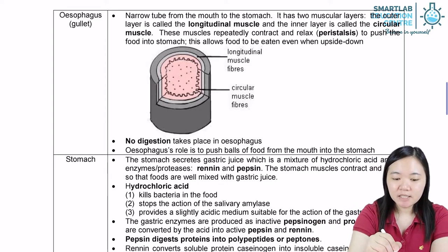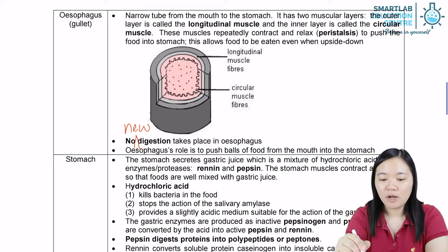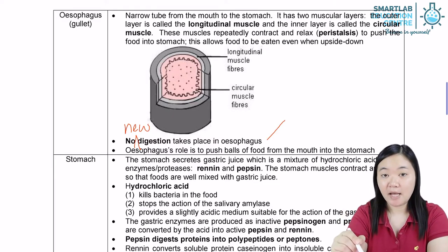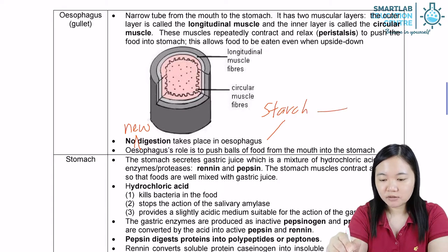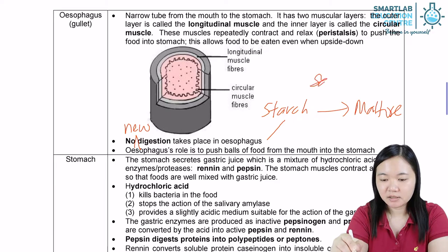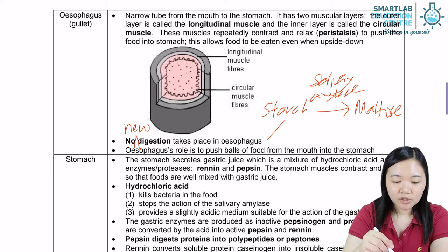The esophagus doesn't really secrete any enzyme, so there is no new digestion. However, there is existing digestion. Remember the existing digestion done earlier? Starch breaking down into maltose — this is still happening in the esophagus. Salivary amylase will still be active until it reaches the stomach.